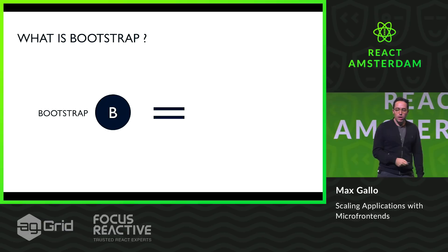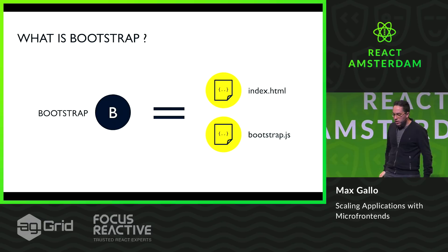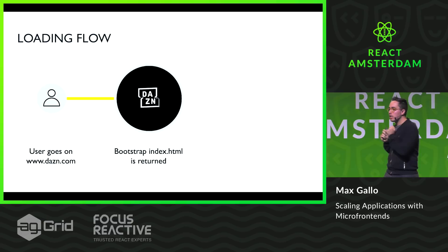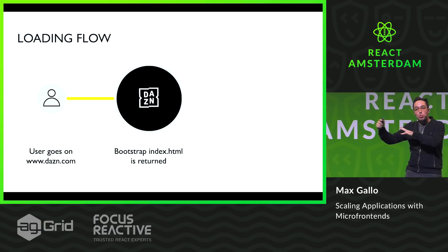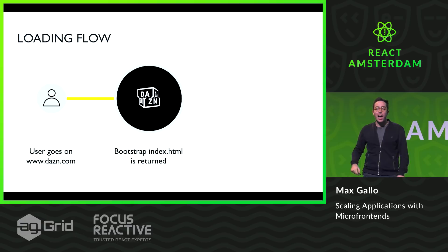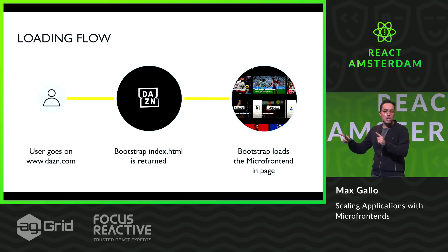Bootstrap is index.html and some vanilla JS — we're not using any rendering library because bootstrap doesn't render anything on screen. When a user goes to dazn.com, the first thing we provide is bootstrap. From the user's point of view, it's just a spinning logo for about 300 milliseconds to half a second, depending on your connection. Behind the scenes, bootstrap is loading the micro frontend. The micro frontend doesn't get loaded directly from the URL — it's bootstrap doing the job.